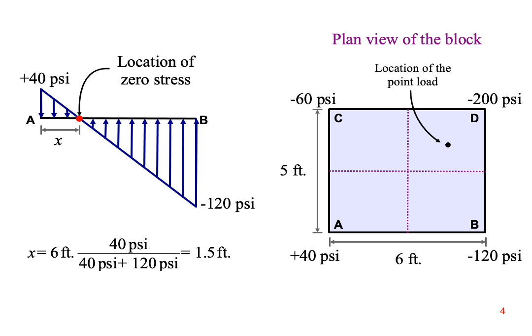A plan view of the block shows the location of the point load along with the combined stresses at the corners. There is a positive tensile stress at point A, and a negative compressive stress at point B. Somewhere along the front edge between points A and B, there must be some location where the stress is zero. We can use similar triangles to find this location. It's one and a half feet to the right of point A.